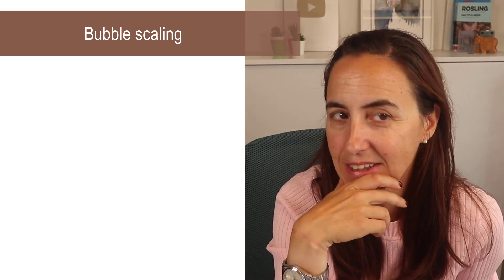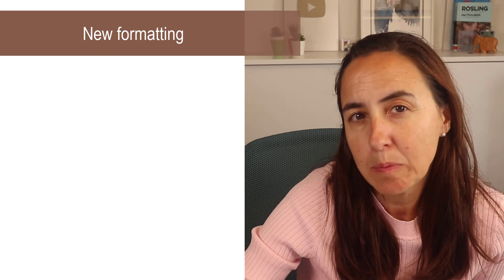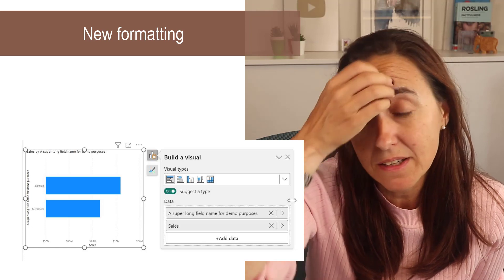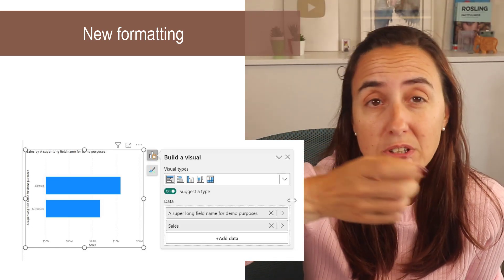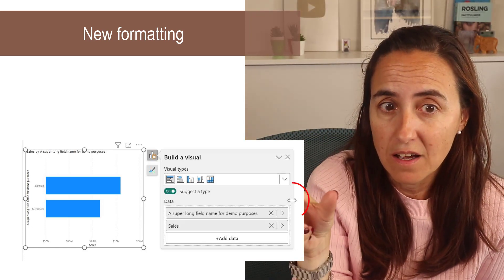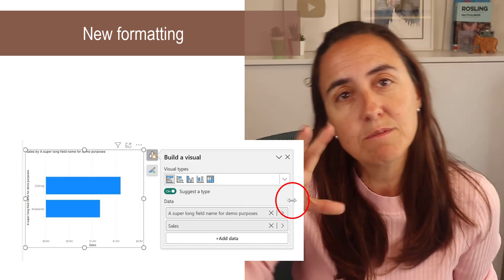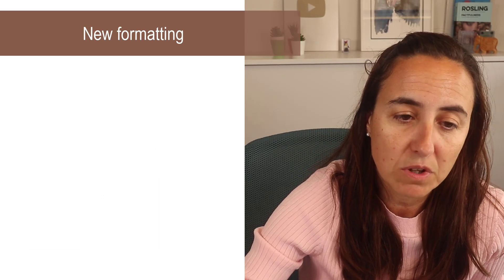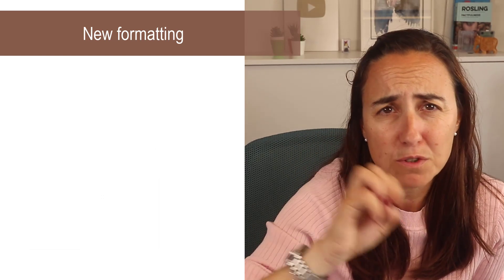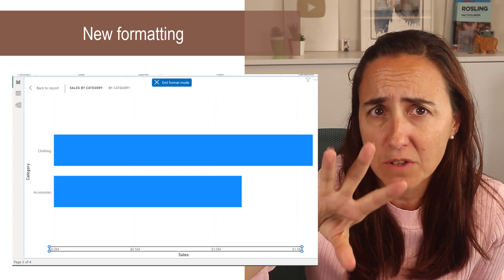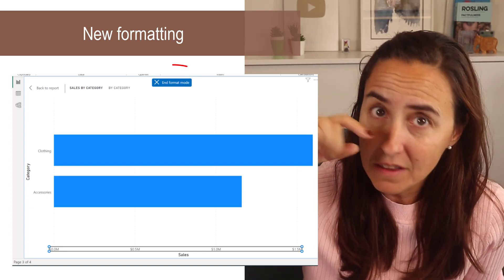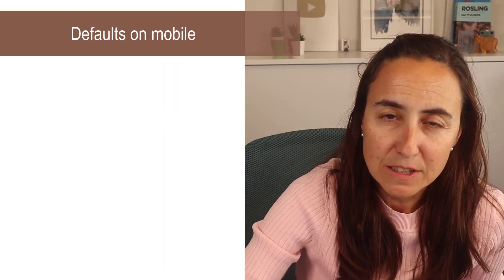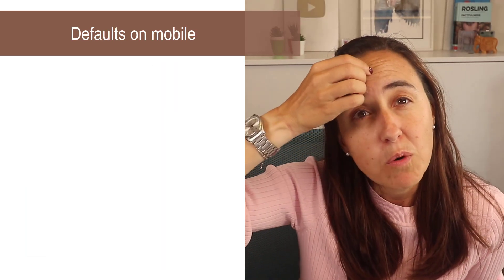They continue updating the on-object interaction pane — the new formatting experience — where the most significant change is that you can resize it in case you have long field names so you can see the entire name. They also made some changes for spotlight and focus. The focus mode is when you expand the visual to get bigger, and now there will be a button that tells you if you are in edit mode while expanding.